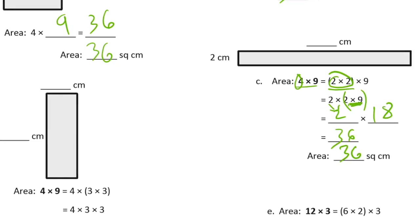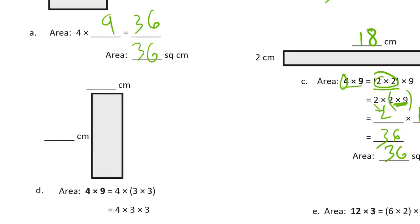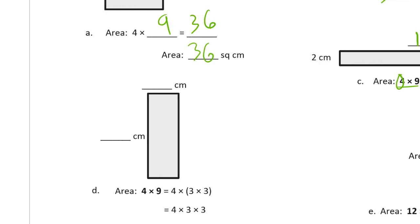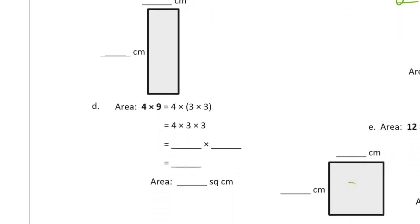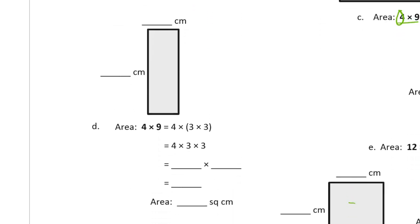Which means that this side here has to be 18. For D, the unknown side length is 18.